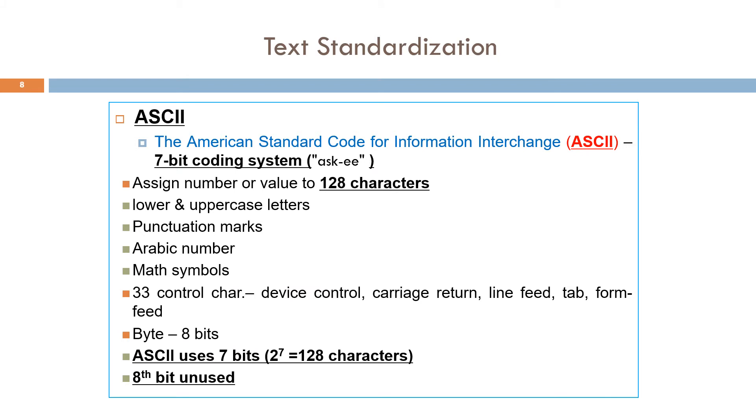American Standard Code for Information Interchange, or ASCII code, is a character encoding scheme and it was the first character encoding standard. It converts information into standardized digital formats that allow computers to communicate with each other or with other electronic devices and efficiently process and store data. It is a code for representing 128 English characters as numbers, with each letter assigned a number from 0 to 127. The code consists of lower and uppercase letters, punctuation marks, Arabic numbers, math symbols, and 33 control characters. ASCII uses 7 bits, 2 to the power of 7 equals 128 characters. A computer usually stores information in 8 bits. The 8th bit is unused in ASCII, thus is normally set to 0.